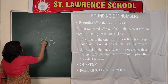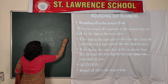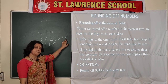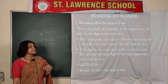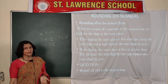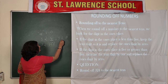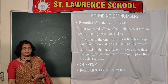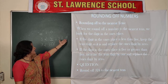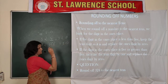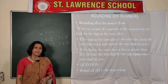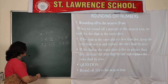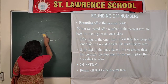Now if the number given is 328, the digit on the ones place is 8, which is greater than or equal to 5. In this case, we increase the tens digit by 1: 2 plus 1 equals 3, and we replace the ones digit by 0. So 328 rounded off to the nearest tens is 330.